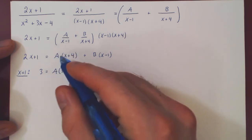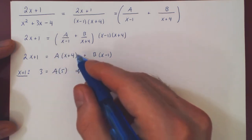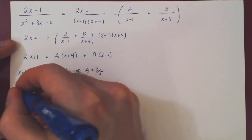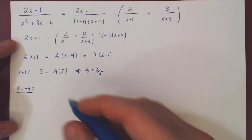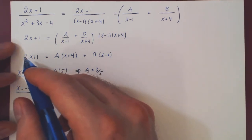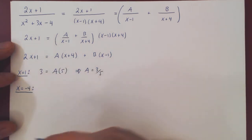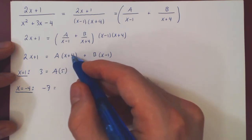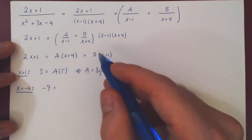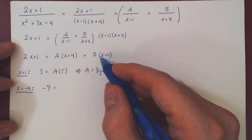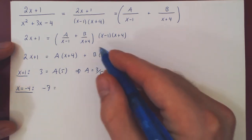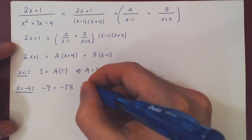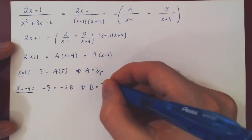We can eliminate A by choosing x equal to negative 4, making the factor x plus 4 equal to zero. Plugging in negative 4: 2 times negative 4 plus 1 equals negative 7, equals A times 0 — this term vanishes — plus B times negative 4 minus 1, which is negative 5B. So negative 7 equals negative 5B, and dividing by negative 5, B equals 7 over 5.